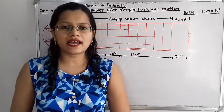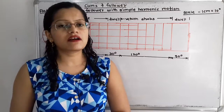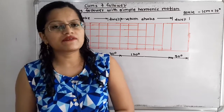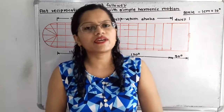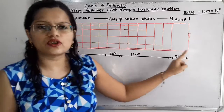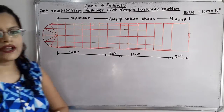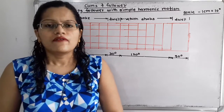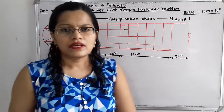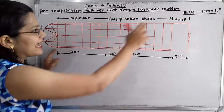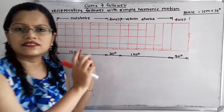We will first draw the displacement diagram for one complete revolution of the cam. For one complete revolution, the angle covered is equal to 360 degree. We will take a suitable scale: 1 cm is equal to 10 degree. So for the total angle of 360 degree, we have to take a horizontal distance of 36 cm on the abscissa. On the vertical axis, we have to take the stroke, which is given as 20 mm. As per the given data, the outstroke is for 120 degree, so we take 12 cm. Then the dwell period is 30 degree, so the next distance is 3 cm.